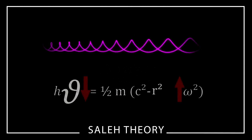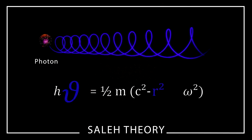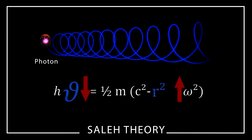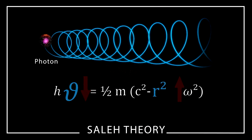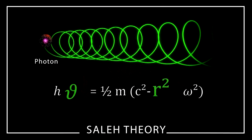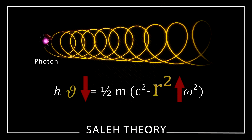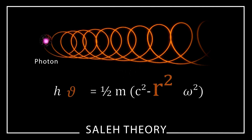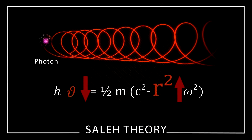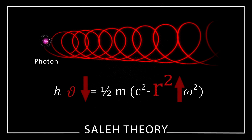Saleh theory explains the nature of red light taking into account its higher internal energy. In fact, the range of frequency is interpreted as the change in the value of the gyro radius, and so the color variety of photon. When the frequency decreases, the wavelength increases, which causes the growth of gyro radius and consequently the internal energy of photon grows up. But the mass is always constant.